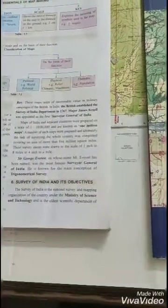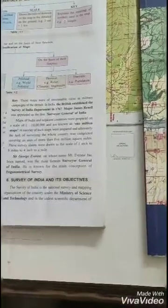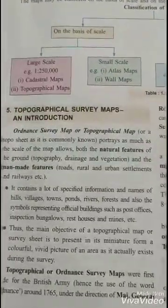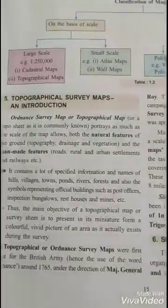So topographical maps — what is a topo sheet? You may have doubts about this. Children, basically this is a kind of map only. Maps are of different types, classified on the basis of scale and on the basis of their function. Talking about the basis of scale, maps are large scale and small scale. Large scale maps are topographical maps.